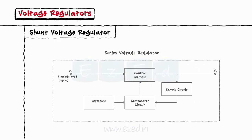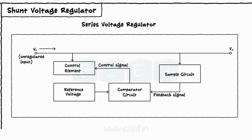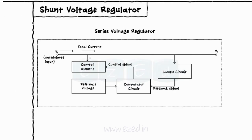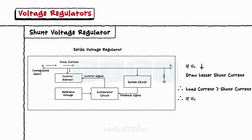The next type is the shunt regulator. In a shunt regulator, the control element is connected in parallel to the load, while other blocks remain the same: sampling circuit, comparator circuit, and reference voltage. The total input current gets divided into two: shunt current entering the control element, and load current flowing through the load. The comparator circuit provides the control signal to the control element to keep the output regulated. For example, if the output voltage decreases, the sampling circuit provides the decreased output to the comparator, which then tells the control unit to draw lesser shunt current so that load current increases and output returns to its previous value.